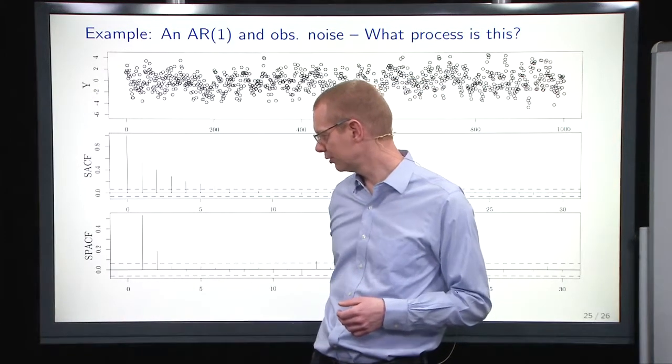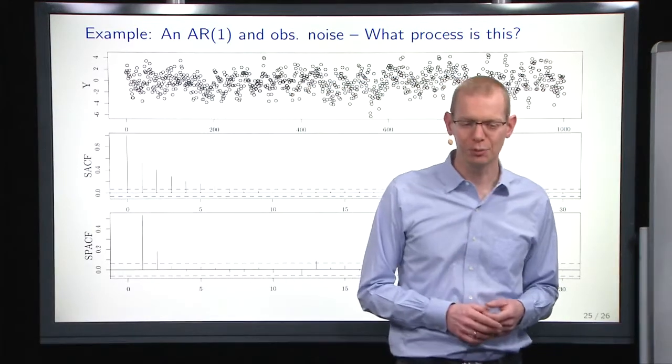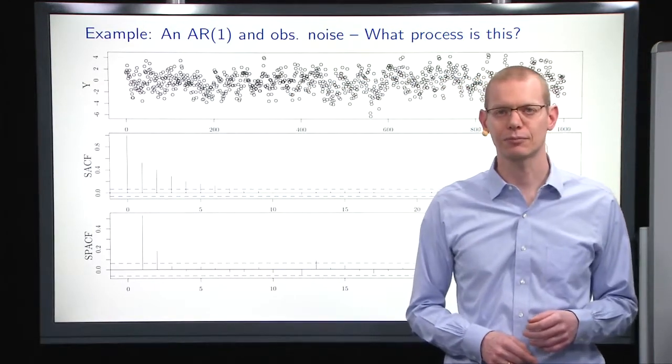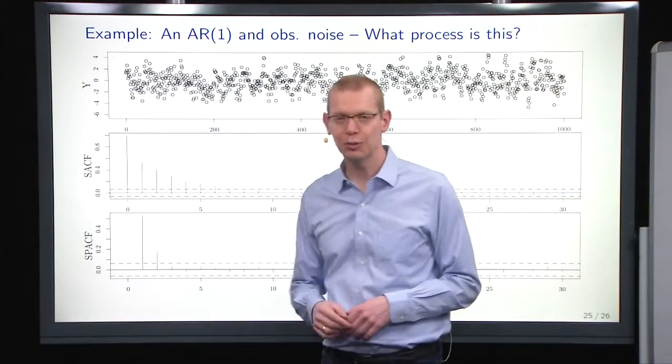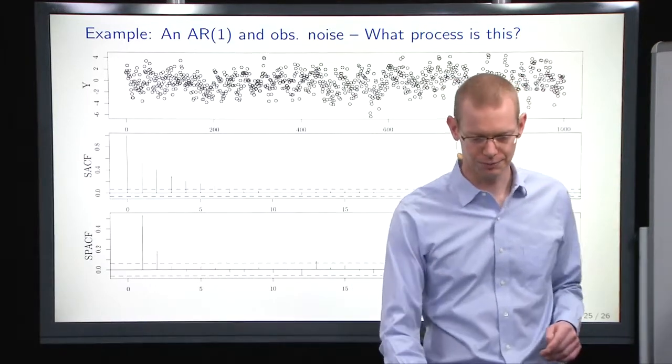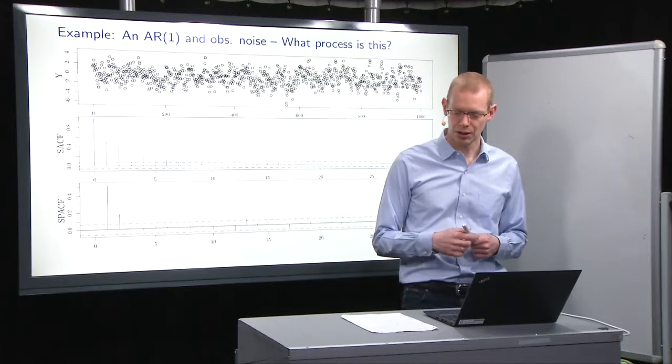But we also have something in lag two here, which should not be there. So what is this model? Is this another exponential or is it actually an AR2 model? Let's just look into it. Let's think of it for a second.